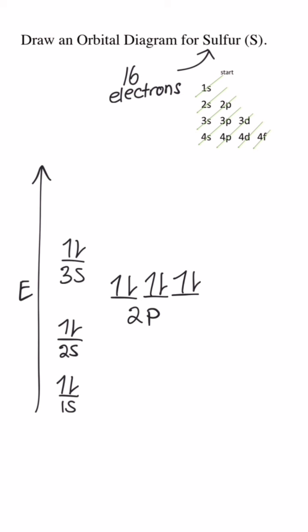Next is the 3s. That's two more electrons. Finally, we come to the 3p, and that is all 16 electrons for sulfur.